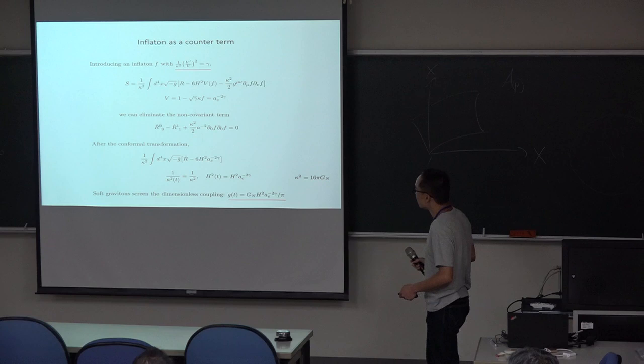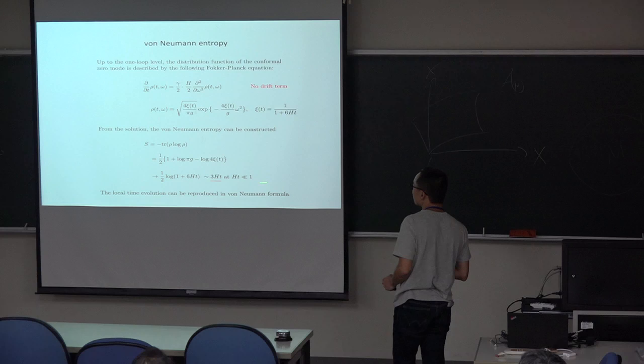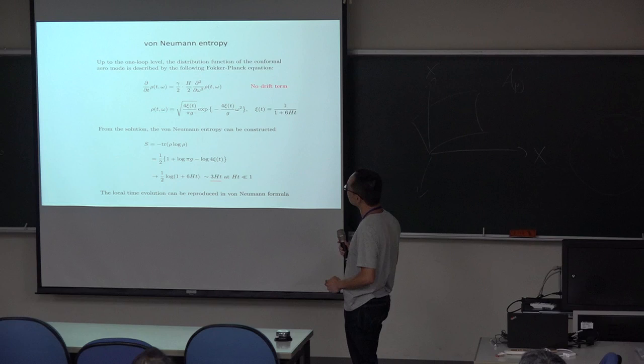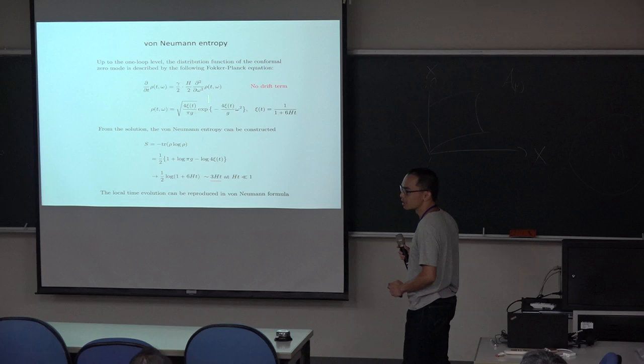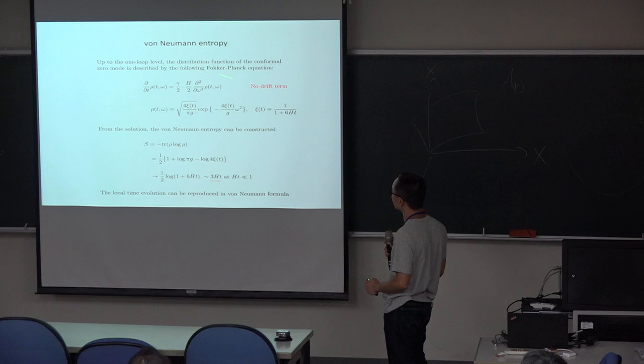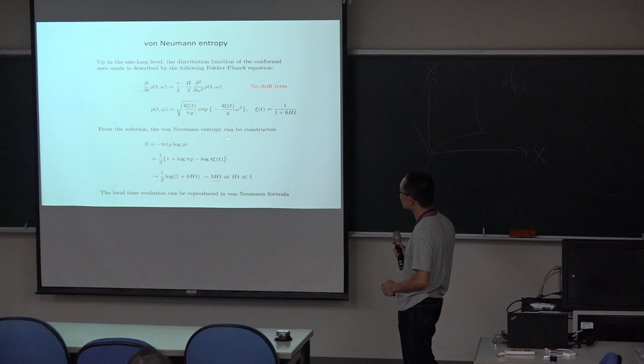Actually, we can construct the time evolution of entropy by using the beta function. We can construct the global time evolution of entropy by evaluating the gravitational effective action. And this is the result. And this is actually the global time evolution of the entropy.